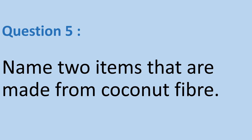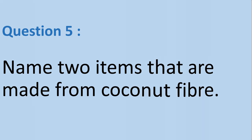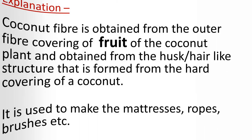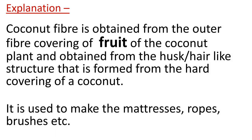Question number 5. Name two items that are made from coconut fiber. Answer: Ropes and mattresses are the two items made from coconut fiber. Coconut fiber is obtained from the outer fiber covering of the fruit of the coconut plant and is obtained from the husk or hair-like structure formed from the hard covering of a coconut. It is used to make mattresses, ropes, brushes, etc.